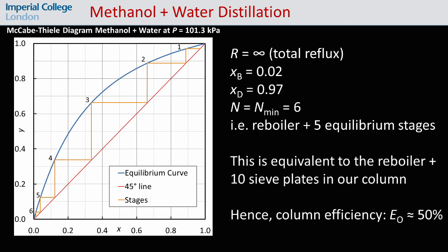So comparing this theoretical situation with the experiment, we see that our still was operating with an overall column efficiency of approximately 50%.